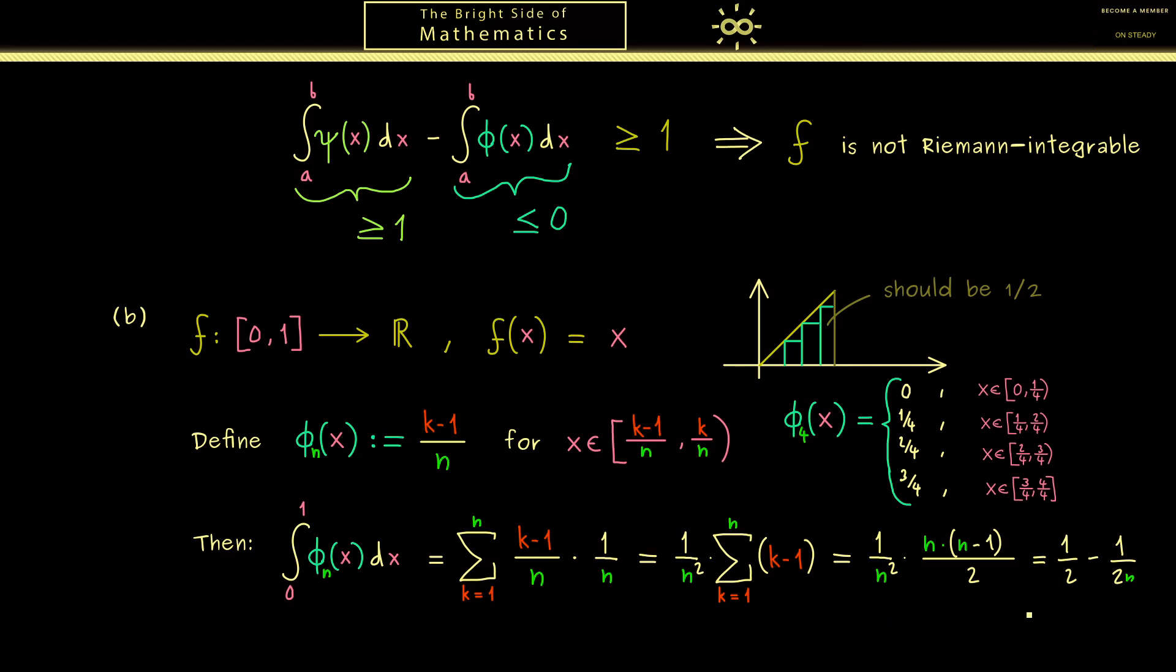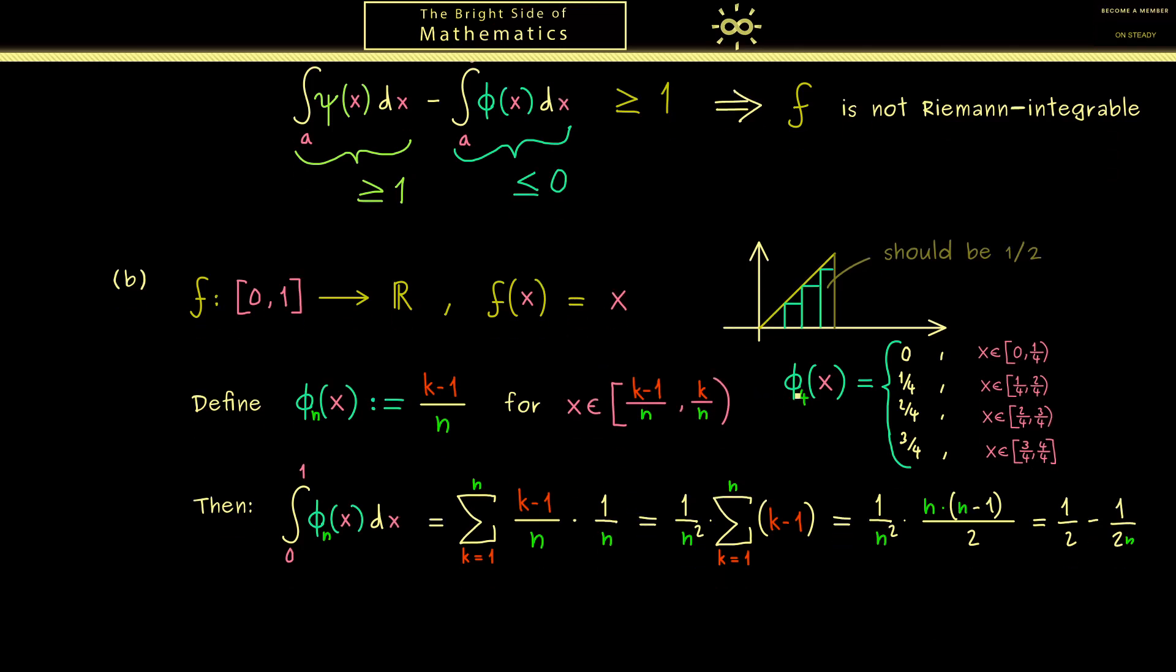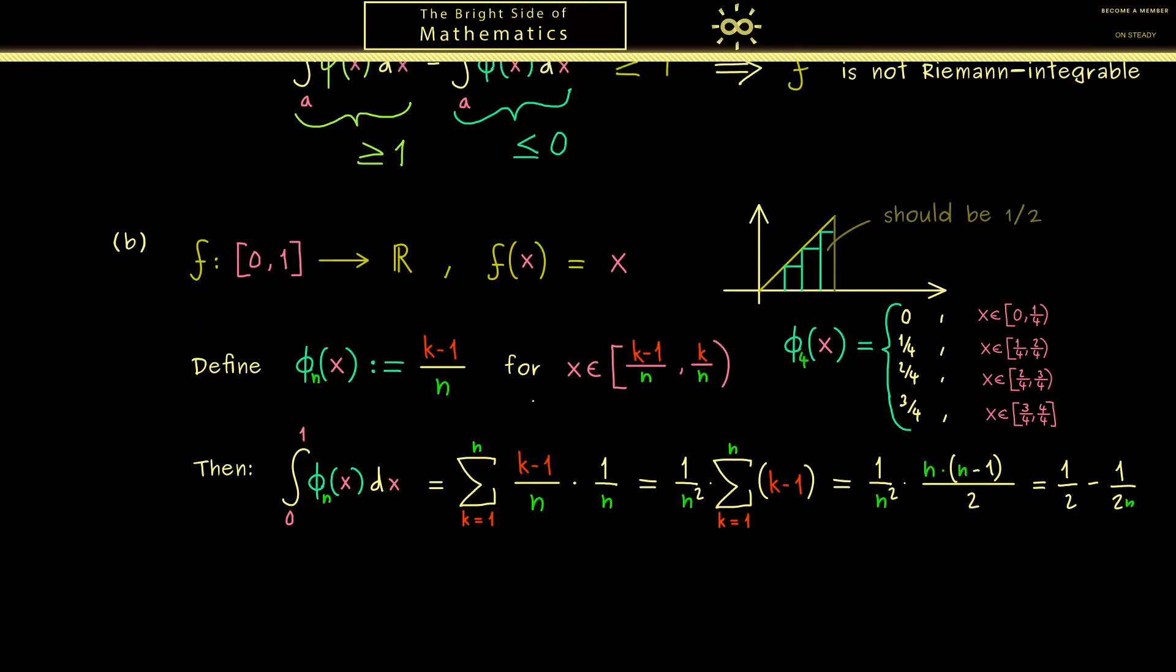However that's not enough for showing that f is Riemann integrable. Because we also have to approximate the integral from above. And of course this is now what we do with a similar step function ψ. Here I would say let's use the same picture as before to sketch the new step function. Of course it should be the same staircase as before but now shifted above the function.